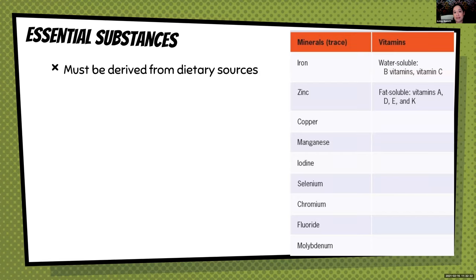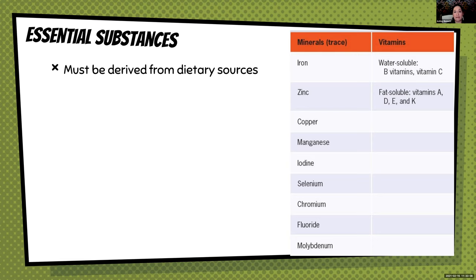Essential substances — you don't necessarily have to memorize all of the different essential substances, but you should know the definition. 'Essential' means that you can't make it. There are so many chemical reactions involved in metabolism, and some of the substrates we need we can make by breaking things down and building things up. But essential substances — whether minerals, vitamins, or certain amino acids — are components your body cannot make, so you have to eat them.